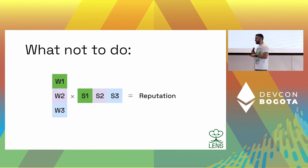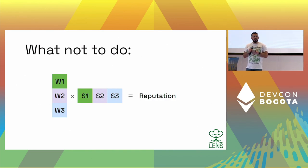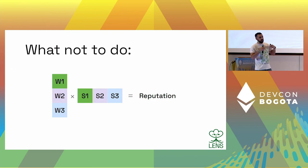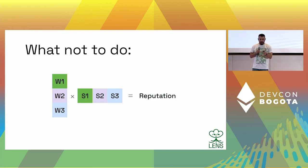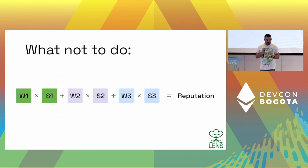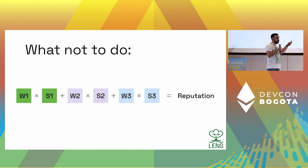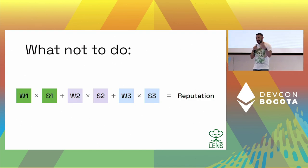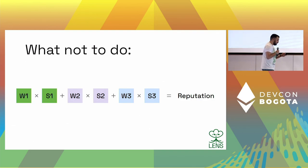So this is what you should not do. Lots of teams are taking a weight vector and a signal vector, doing the dot product, and out comes your reputation. Another way to think about that: you have your weights, you have your signals, you multiply them and sum them up, and then out comes a reputation number.